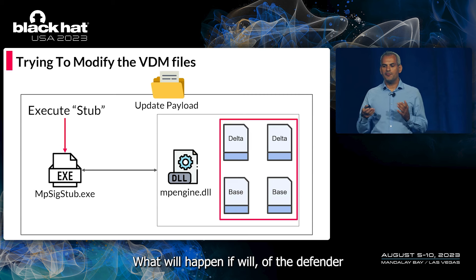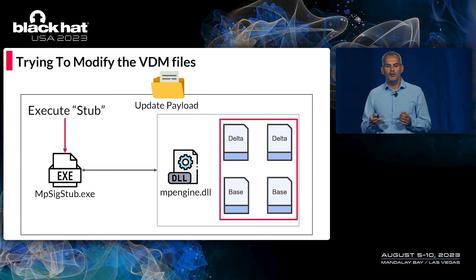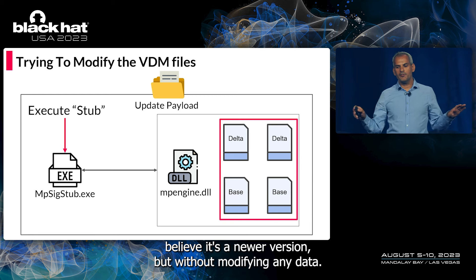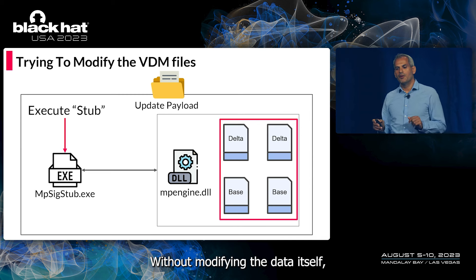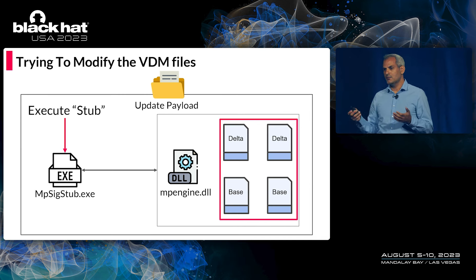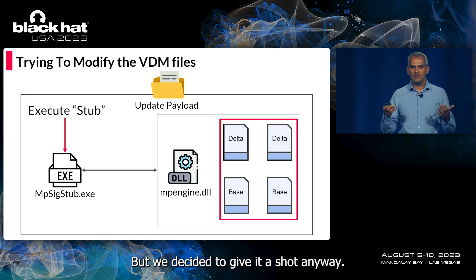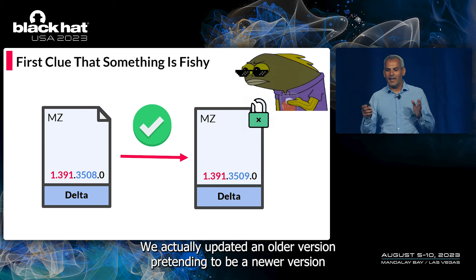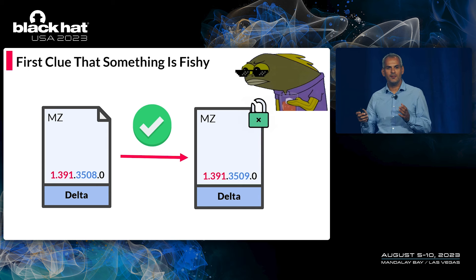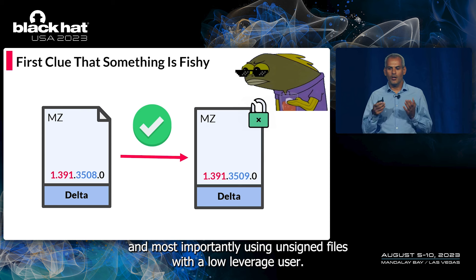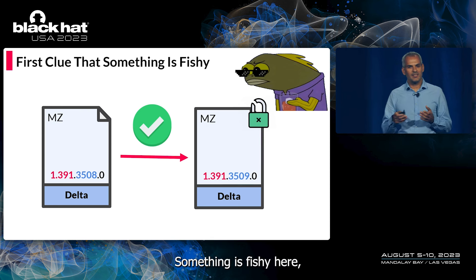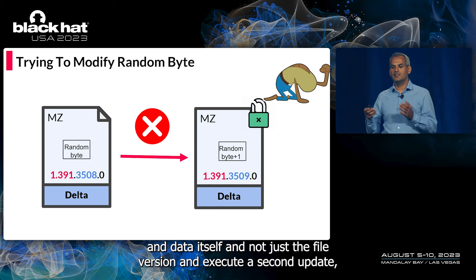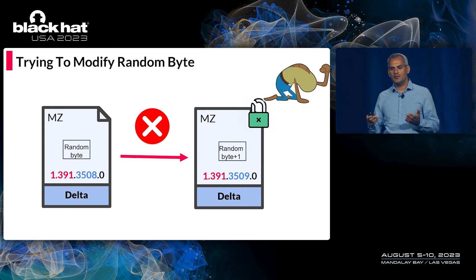We asked: what would happen if we updated Defender using a modified older VDM file? We decided to modify only the file version, making Defender believe it's a newer version but without modifying the data itself. This modification turns the VDM files unsigned since file versions are embedded in the file data. For our surprise, the update attempt succeeded — we updated an older version pretending to be newer, using unsigned files with a low-privileged user. This was the first clue that something is fishy. However, when we tried to modify additional random bytes in the VDM data itself and execute a second update, we got an error.